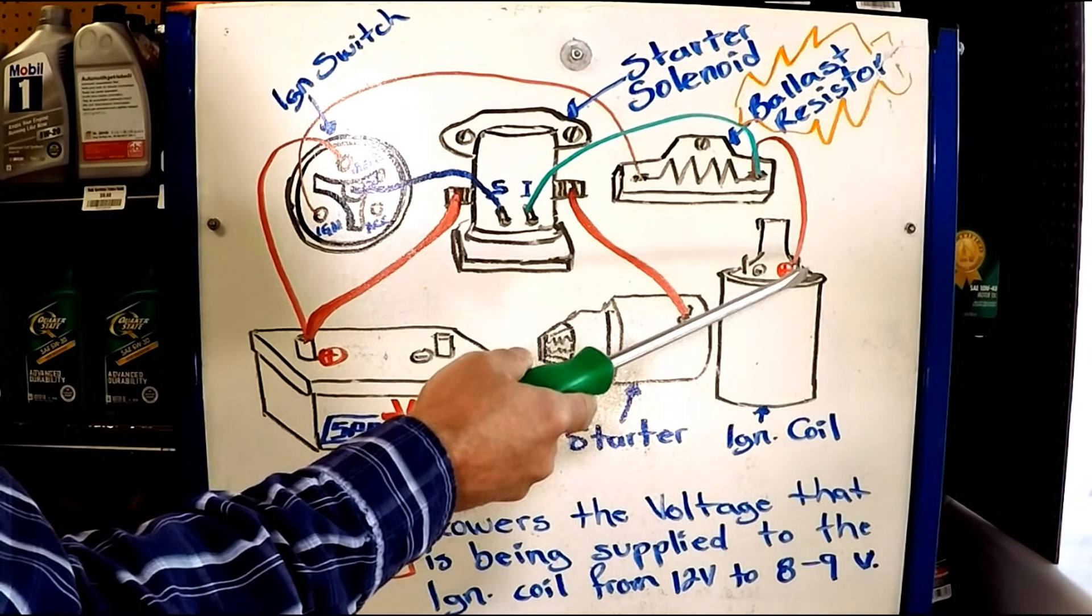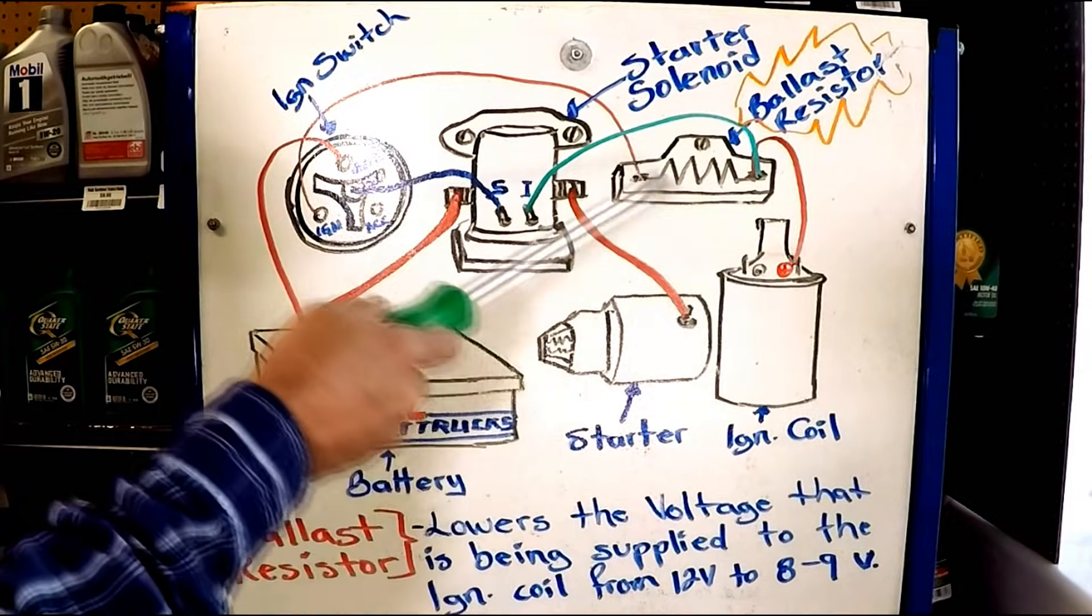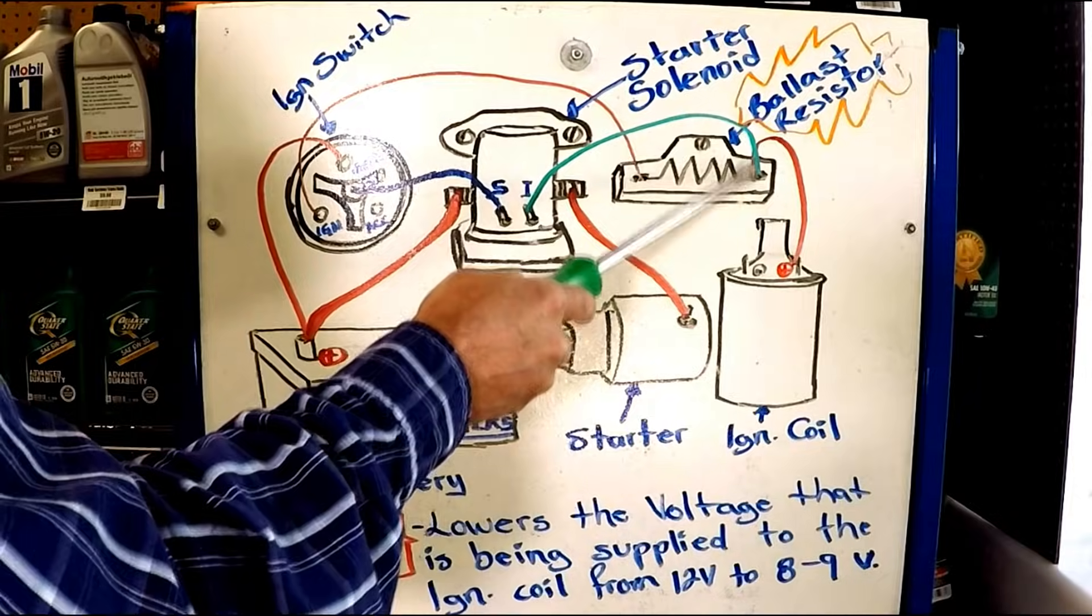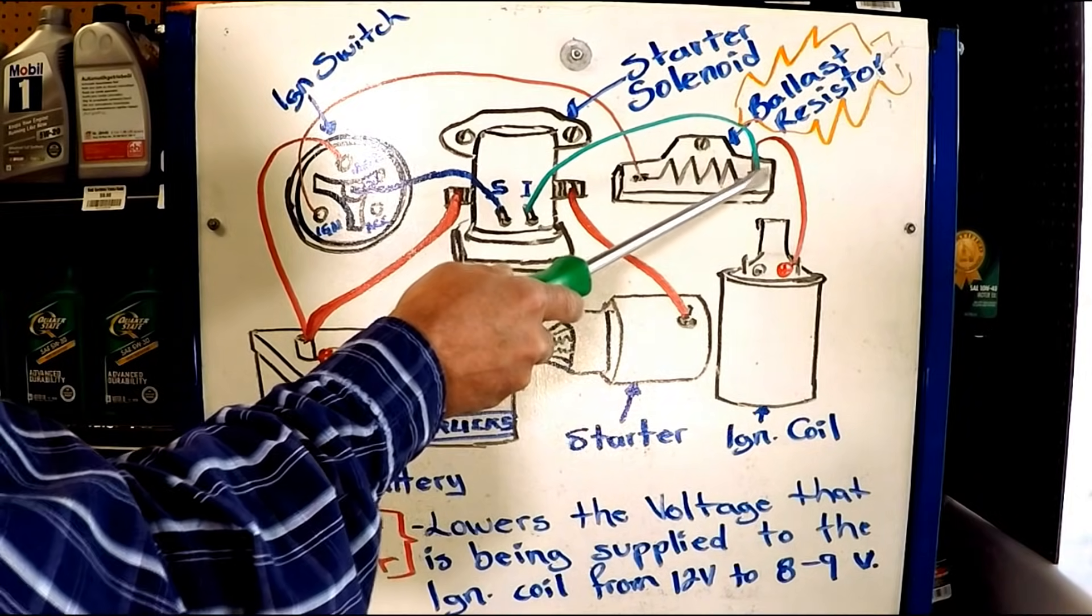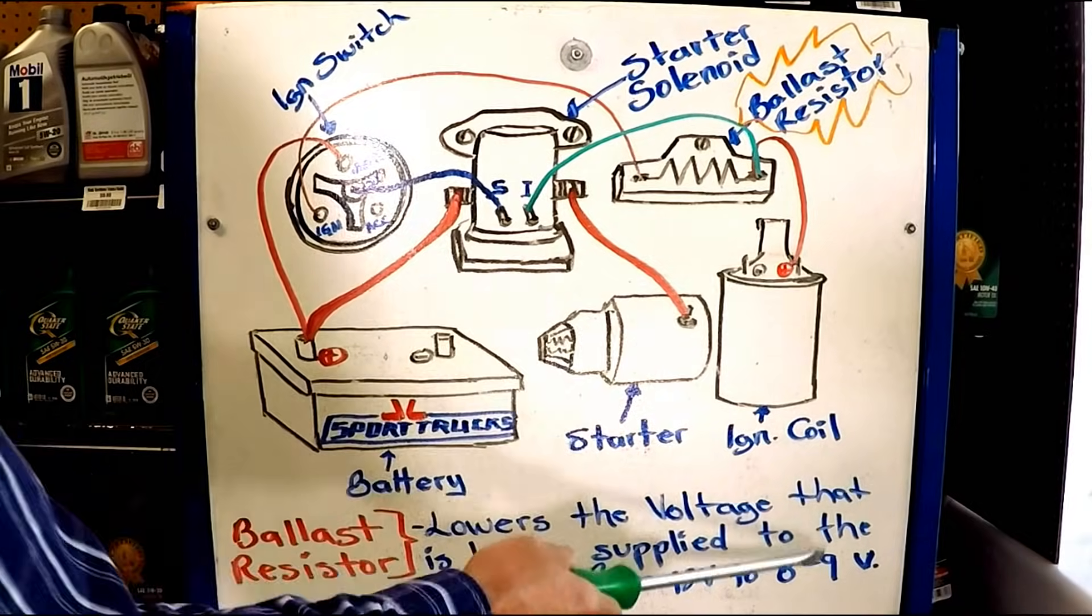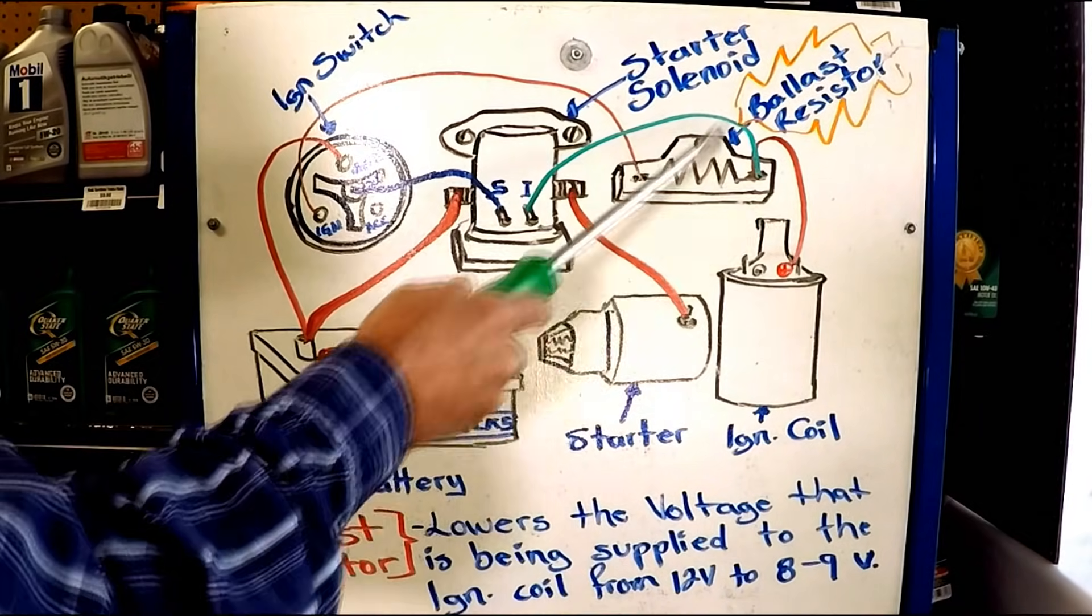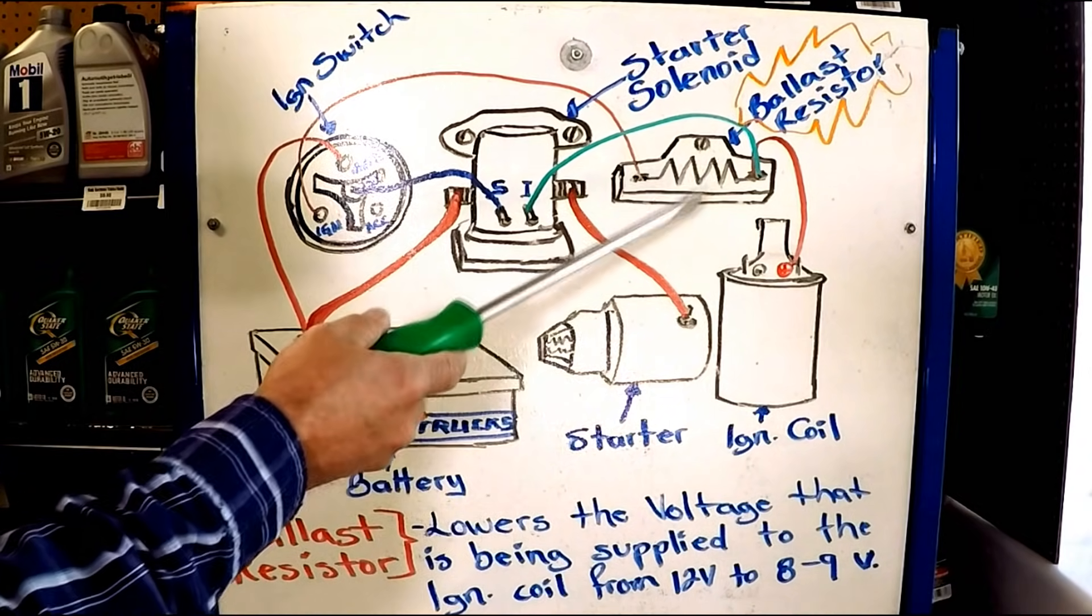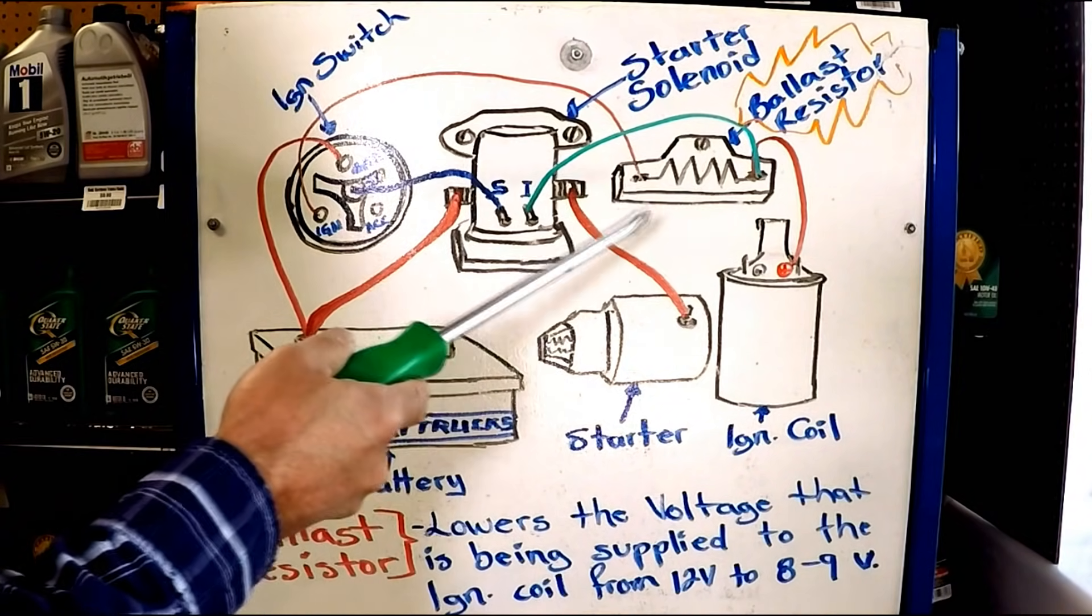So now you know that on a point system setup, the ignition coils never get 12 volts. Because if they did, they would overheat and they wouldn't last very long. To verify this, you can use a voltmeter. You can turn the key on. You can check the power that is arriving to the ballast resistor. You can check the voltage that is coming out. You can either test it here or test it over here. And it shouldn't be 12. It should be anywhere from 8 to 9. So that's when the key is on and after the vehicle starts.